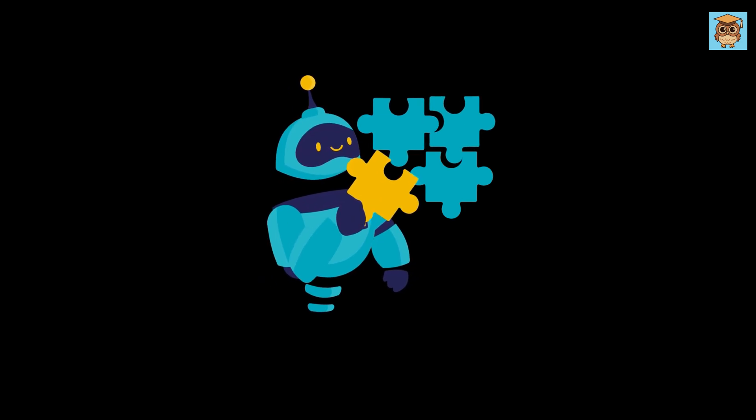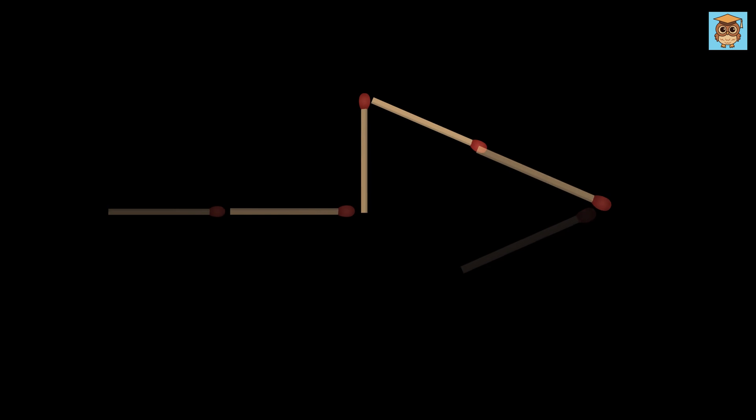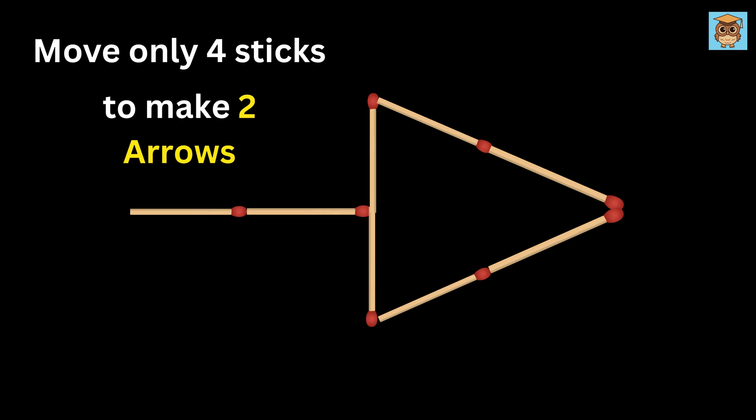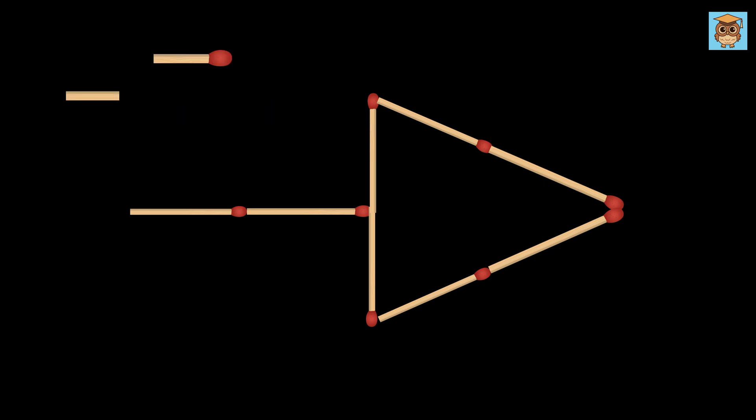Here's another fun puzzle for you to try. You are given a big arrow shape that is made using matchsticks. Your task is to move just four matchsticks and turn the one big arrow into two smaller arrows. That means you cannot move more than four sticks. You also cannot break any of the matchsticks or add new ones. All the sticks you use must come from the big arrow that is already there.